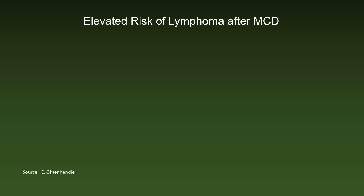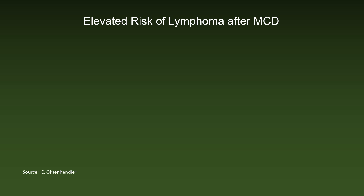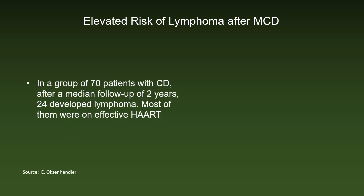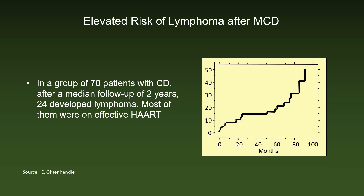Multicentric CD, with its polyclonal proliferation of lymphocytes, is not considered malignant. However, the incidence of lymphoma is high. In a group of 70 patients with CD, after a median follow-up of two years, 24 developed lymphoma, although most of them were on effective HAART. The Kaplan-Meier curve shows an incidence of approximately 50 percent of lymphoma after a follow-up of seven years.